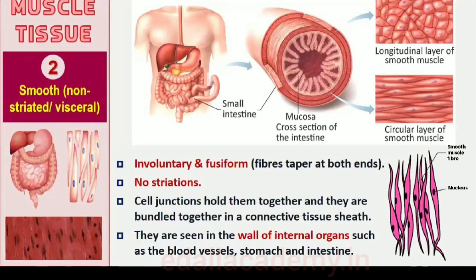The smooth muscle fibers taper at both ends (fusiform) and do not show striations. Cell junctions hold them together and they are bundled together in a connective tissue sheath. The wall of internal organs such as the blood vessels, stomach and intestine contains this type of muscle tissue. Smooth muscles are involuntary as their functioning cannot be directly controlled; we are not usually able to make them contract merely by thinking about it as we can with skeletal muscles.